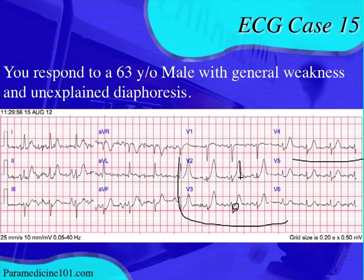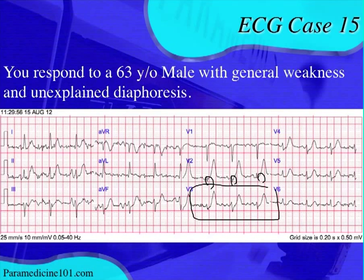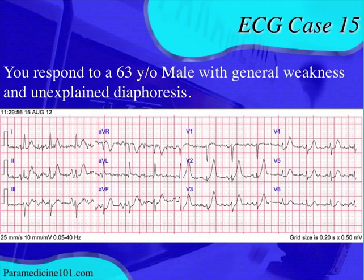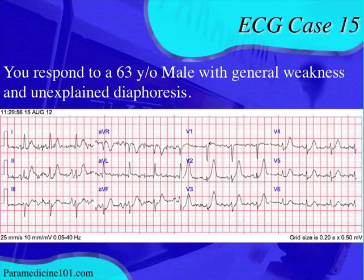Not only do you have symmetrical broad-base T waves, but you also have J point depression. It's hard to see due to the artifact, but the J point — there, there, and there — shows a little depression. You can see it best in V3: the ST segment in V3 is a little depressed, and also slightly in V4. These T waves are very tall compared to the QRS complex — look at the QRS size in V2 versus its T wave. Depolarization and repolarization are usually proportionate to each other.